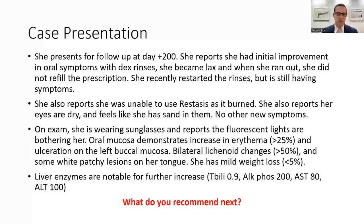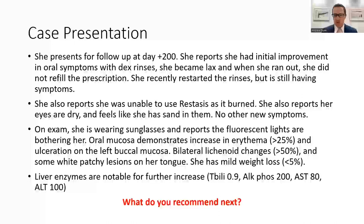The patient returns for follow-up at day plus 200. She reports she had initial improvement in oral symptoms with the dexamethasone rinses, but became lax and when she ran out, she didn't refill it. She's recently intermittently restarted but still having symptoms. She was unable to use the Restasis as it burned. Her eyes continue to be dry and feel like they have sand in them. She doesn't have any new symptoms; however, she's wearing sunglasses and reports that the lights in the office are bothering her. Her oral mucosa demonstrates an increase in erythema — greater than a quarter of the mouth now — ulceration in the left buccal mucosa, and bilateral lichenoid changes in greater than half the mouth with some white patchy lesions on her tongue. She's starting to lose a little bit of weight — less than 5%. Her liver enzymes are continuing to rise with an ALKPHOS of 200, AST of 80, and ALT of 100.